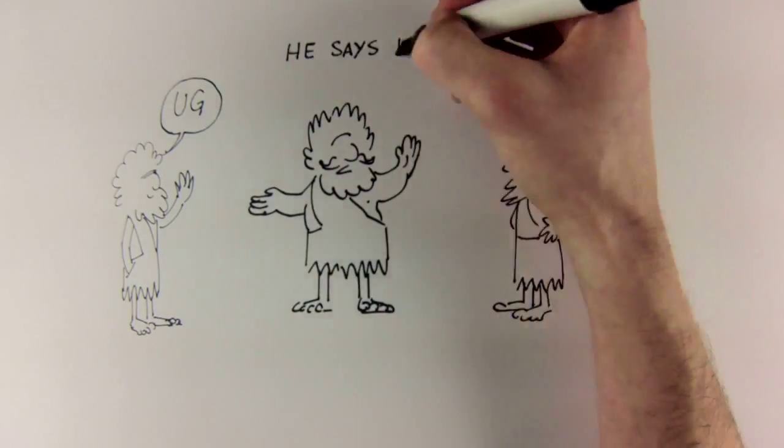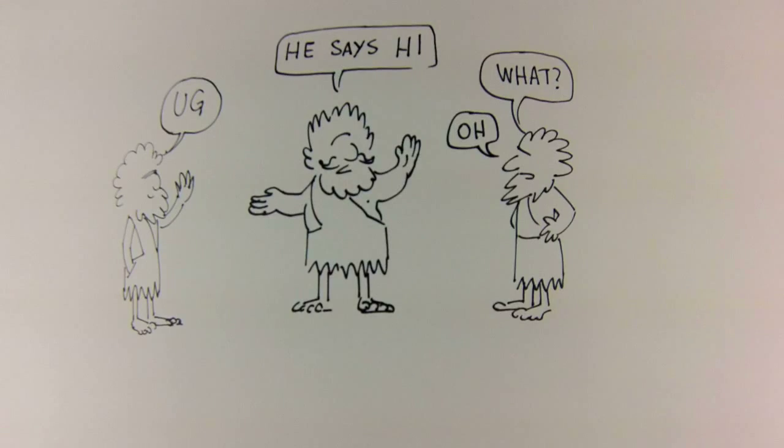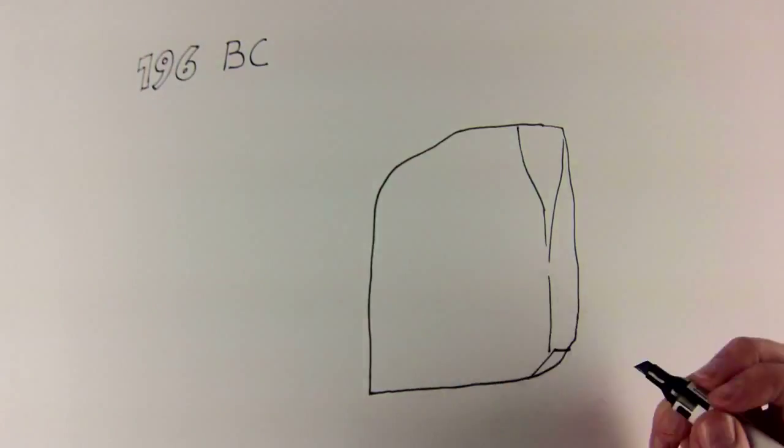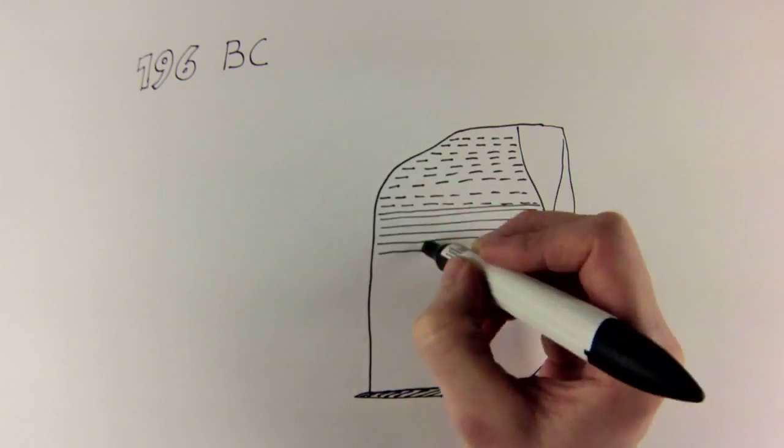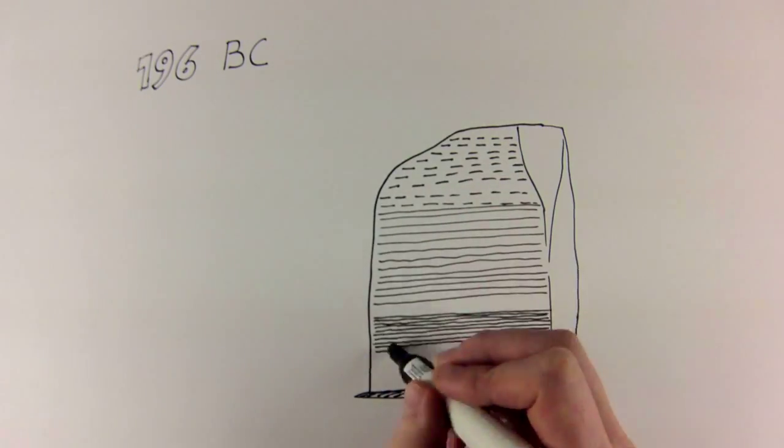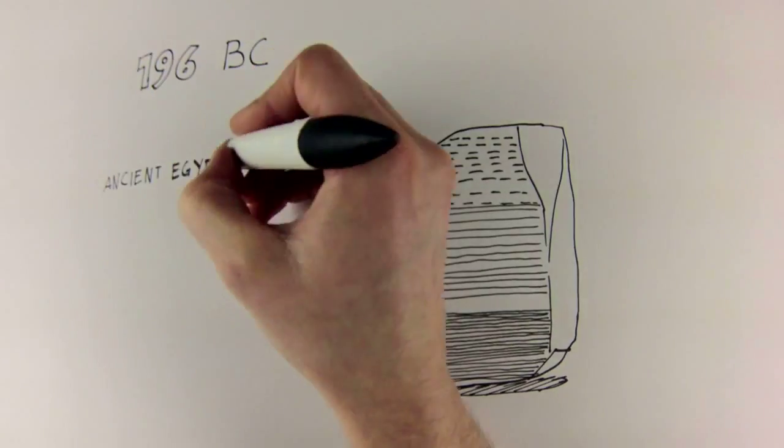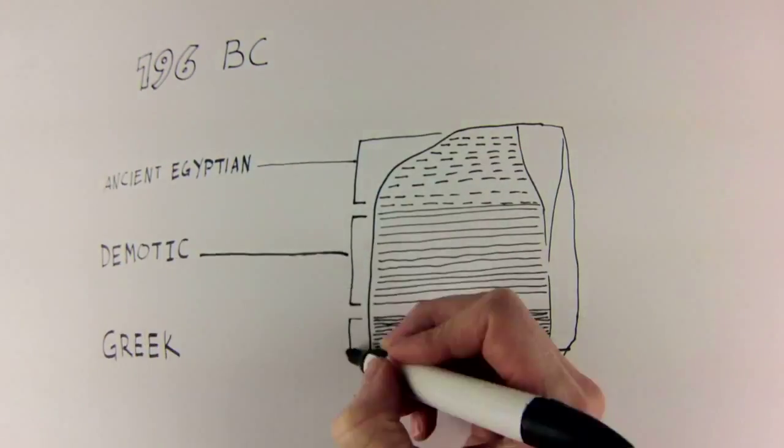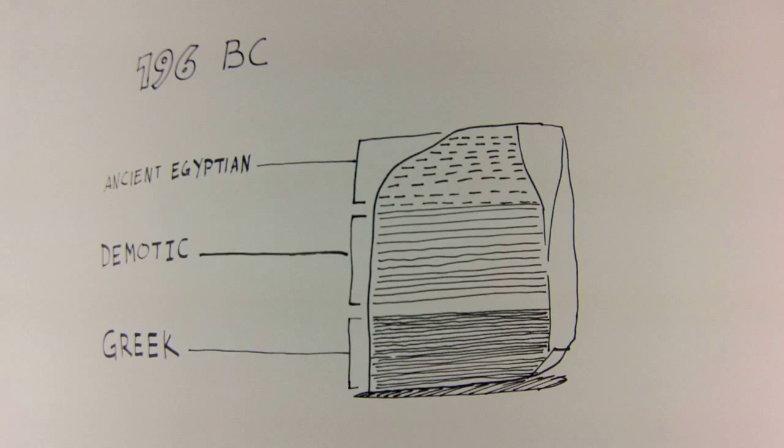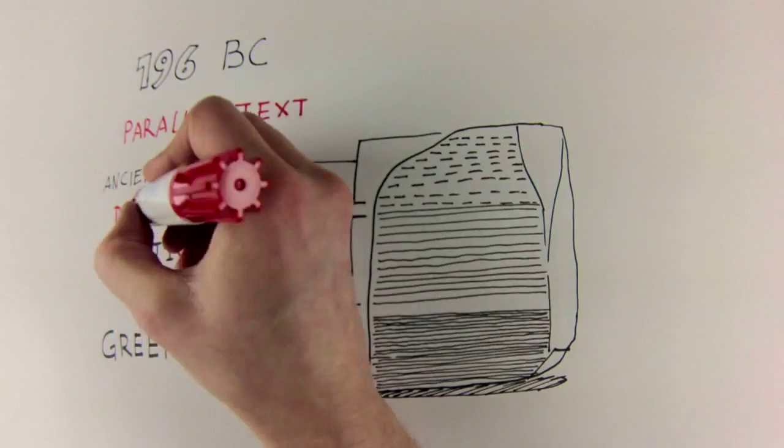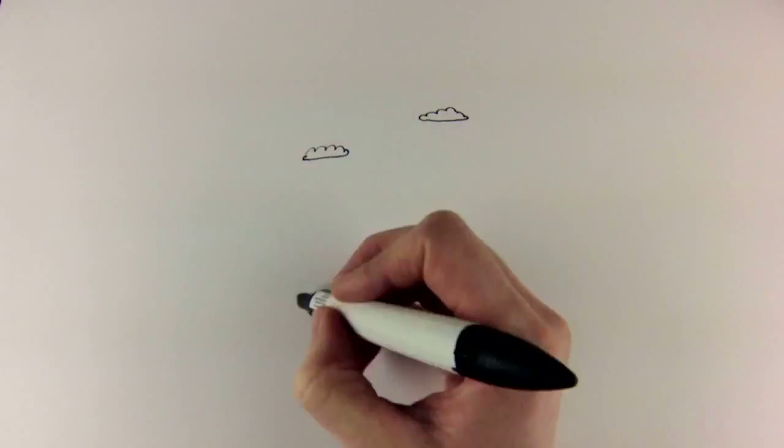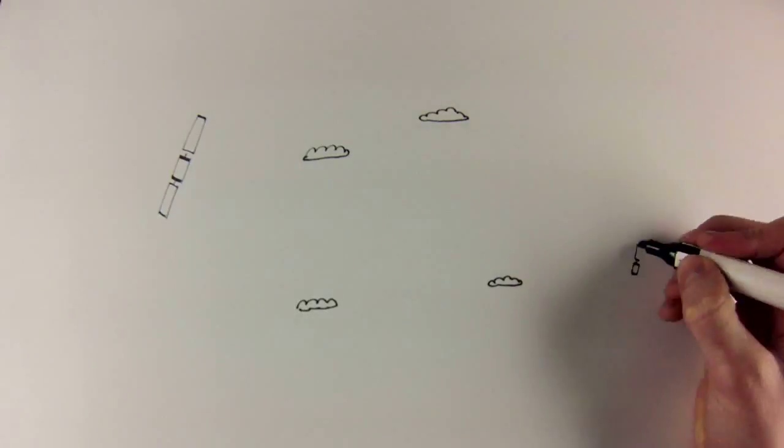But translation isn't limited to just speaking to someone. Even in ancient times, written translations of important documents, laws, and king's orders were very important. Archaeologists have uncovered ancient stone tablets like the Rosetta Stone containing the same text written in several languages. These translations represent the very first of what we now call parallel texts and have been crucial in helping modern scientists decipher ancient languages.